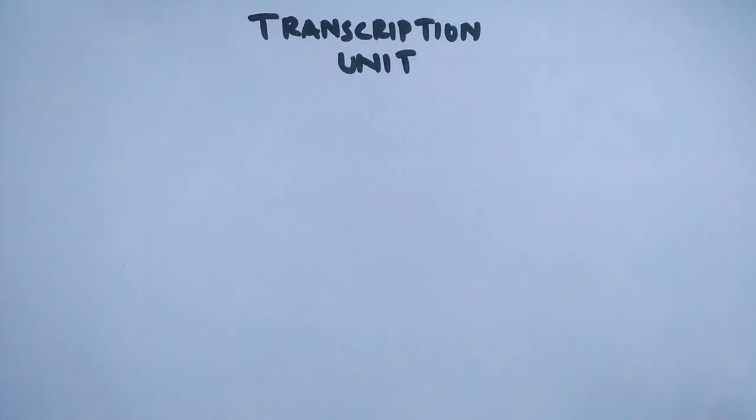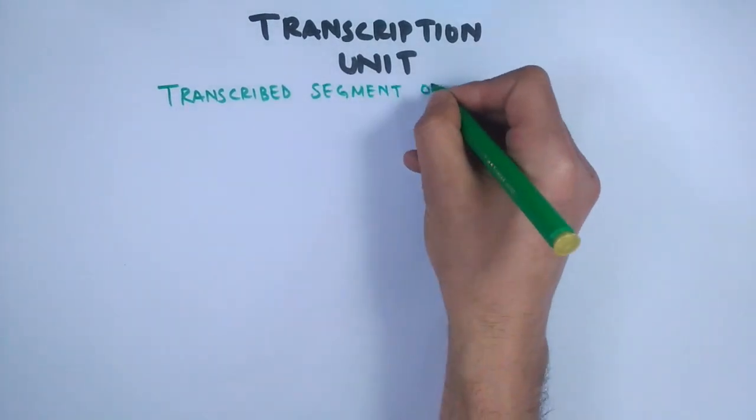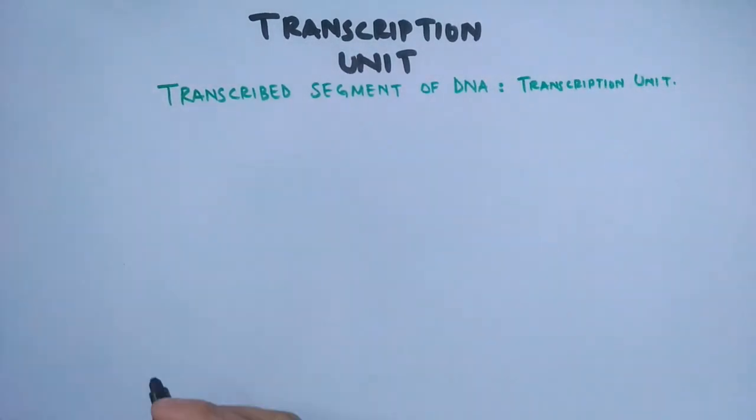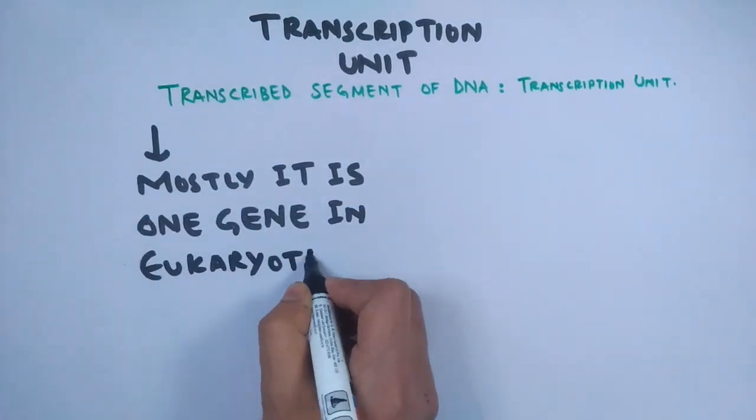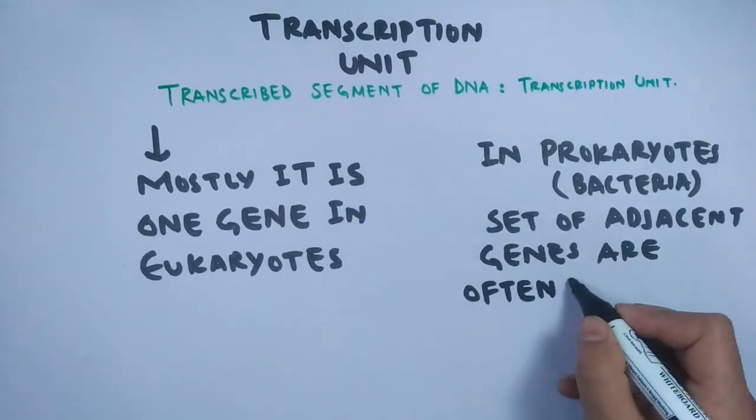The transcription unit is the transcribed segment of DNA. Mostly it is one gene in eukaryotes, while in prokaryotes it is the set of adjacent genes.